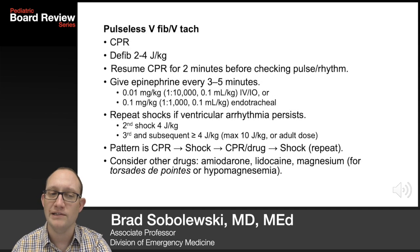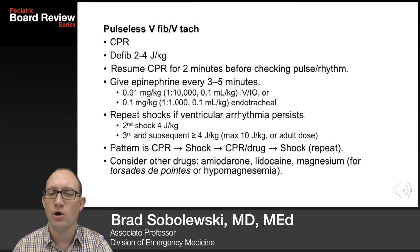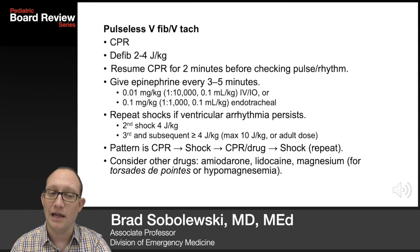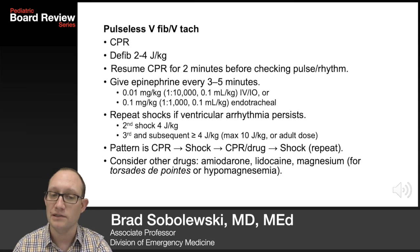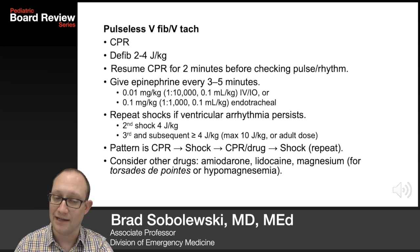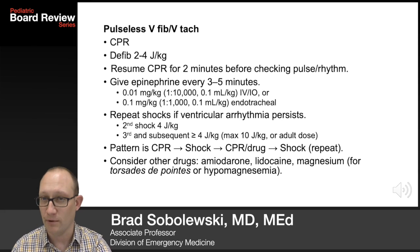In pulseless V-fib or V-tach, definitely do CPR and defibrillate with two to four joules per kilo. Remember, a wide rhythm in an unconscious patient needs defibrillation. Resume CPR for two minutes before checking the pulse and rhythm. Give epi every three to five minutes and repeat shocks if ventricular arrhythmia persists. The pattern is: CPR, shock, CPR, drug, shock, and repeat. Consider other drugs including amiodarone and lidocaine for antiarrhythmia, or magnesium for torsades de pointes or hypomagnesemia.